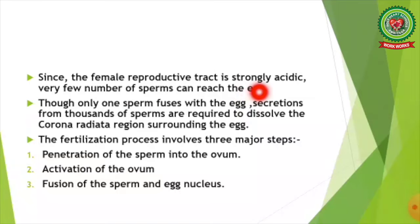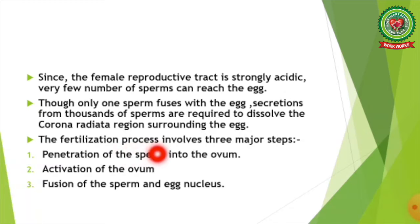A sperm undergoes a number of changes called capacitation in order to fertilize the ovum. This involves changes in the membrane covering the acrosome. The female reproductive tract is strongly acidic. Very few sperms can reach the egg, and though only one sperm fuses with the egg, secretions from thousands of sperms are required to dissolve the corona radiata region surrounding the egg.